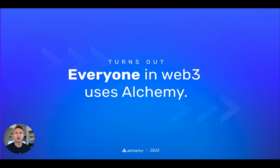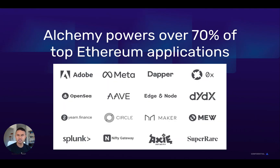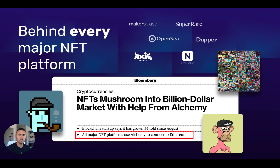Here's an even bigger fact you might not know: everybody in Web3 uses Alchemy already, from consumers to miners to developers. You've almost definitely made an Alchemy request in your life already. 60% of Ethereum users have been estimated to use products powered by Alchemy. We formed the infrastructure behind 70% of the top Ethereum applications. Aave, DYDX, even Adobe and Meta use us. On top of that, every single major NFT marketplace — SuperRare, Dapper, MakersPlace — they all send their traffic through us.